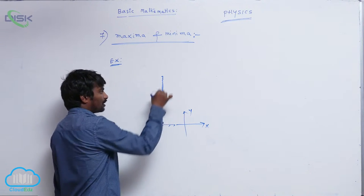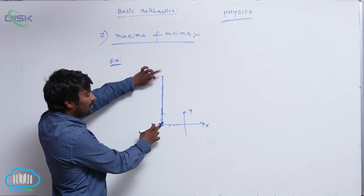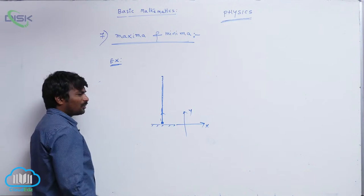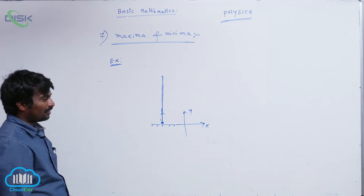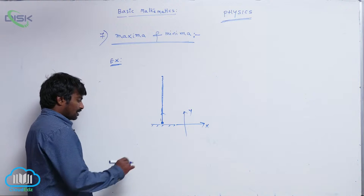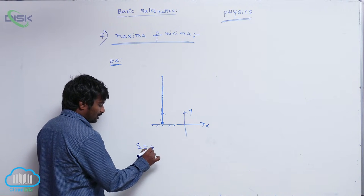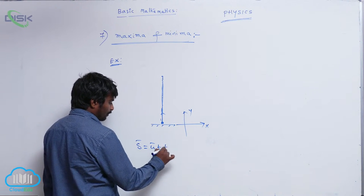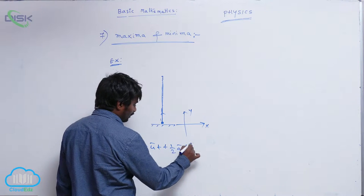In its total journey from here to here, this point is the maximum displacement. How to calculate maximum displacement? Here displacement will be maximum. We know displacement is equal to ut plus half at